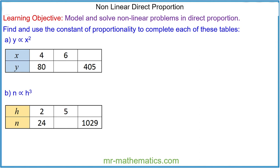Hello and welcome to our lesson on modeling nonlinear direct proportion. For question A, we have y is proportional to x squared. This tells us that as the value of y increases, the value of x squared will also increase, but it doesn't tell us at what rate they increase together. To find this out, we need an equation involving the constant of proportionality, which is k.